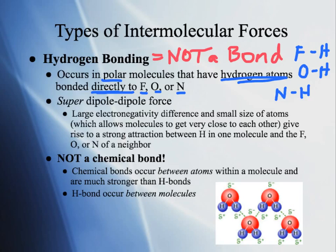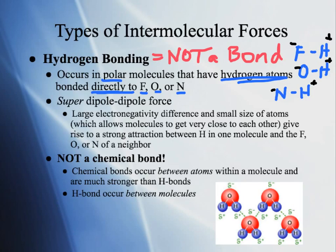What do F, O, and N have in common? They are the most electronegative atoms on the periodic table. They're going to be pulling electrons extremely hard, setting up an even stronger charge in the molecule. The F, O, and N will be definitely negatively charged, and the H's will be definitely positively charged — even more so than other electronegative atoms.